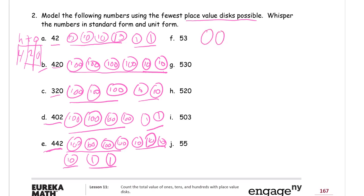53. You need 5 tens to make 50. So the number is 53. And it's 5 tens, 3 ones.